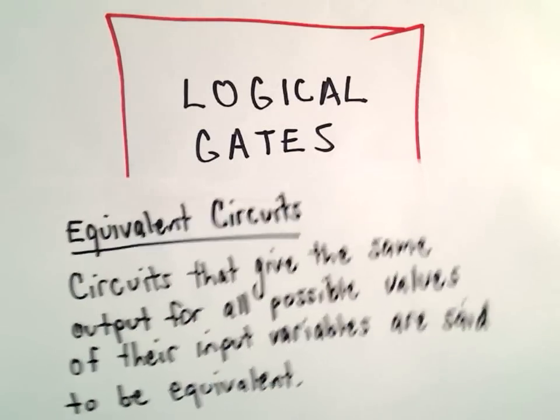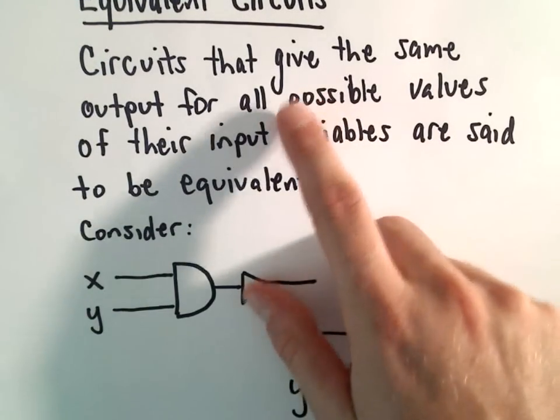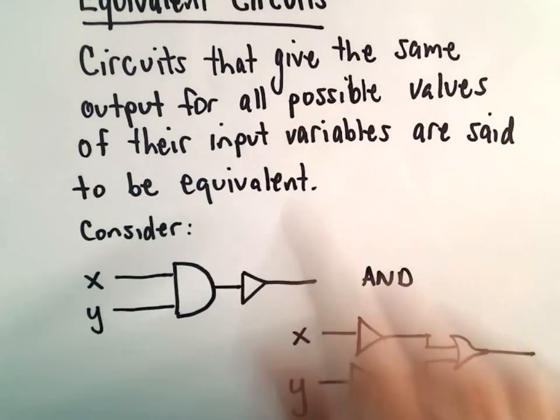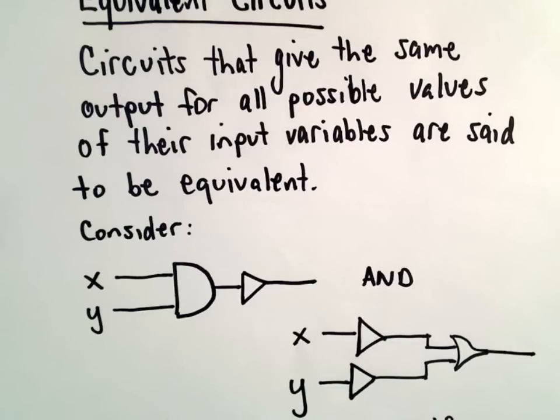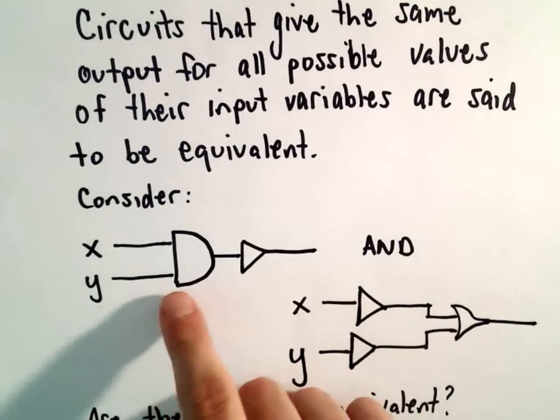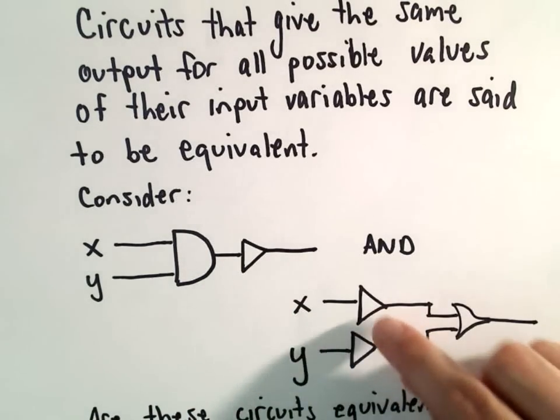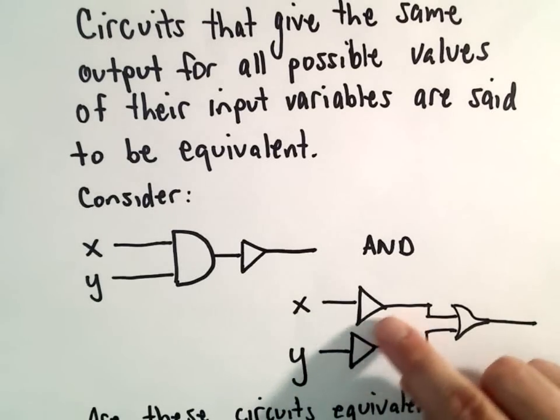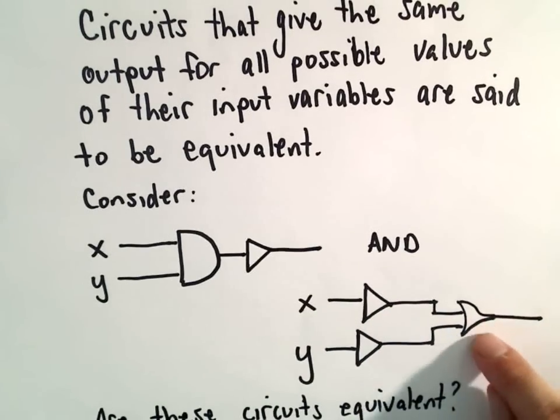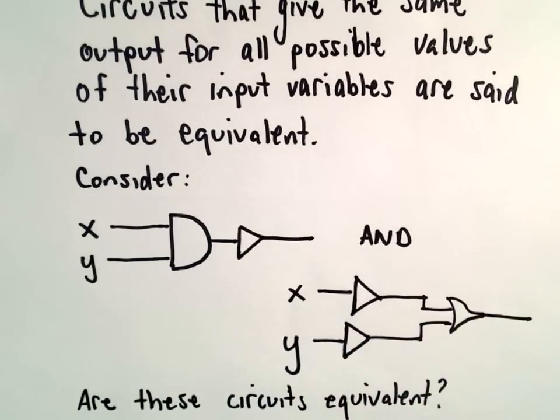Circuits that give the same output for all possible values of their input variables are said to be equivalent. Suppose we have two different circuits. The first circuit involves an AND gate and a NOT gate, and the second circuit has three gates: two NOT gates and an OR gate. We want to know whether these two circuits are equivalent.